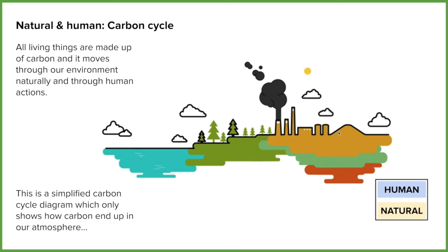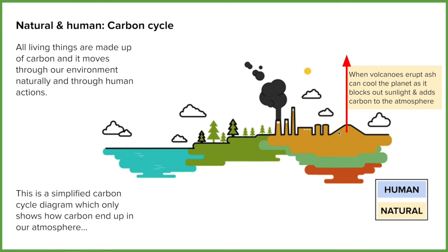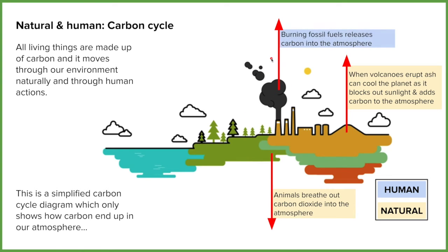Evidence number two is the carbon cycle — again, both a human and a natural factor. All things are made of carbon, and carbon moves and is stored through the environment both naturally and through human activity. Naturally, we've got volcanoes: they spew ash which initially produces global cooling by blocking sunlight, but also release carbon dioxide from the vent. Eventually this leads to more global warming. We've also got animals breathing — they produce carbon dioxide into the atmosphere. For human factors, we burn fossil fuels through industry or transport. We also chop down trees: trees are a store of carbon, so deforestation reduces the potential to store carbon and it ends up in the atmosphere.